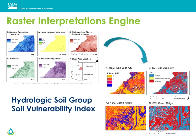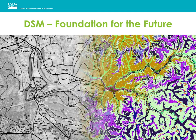Here are some results from the interpretations engine for hydrologic soil group and soil vulnerability index. The raster data inputs are shown in the upper left of the slide and include property maps derived with DSM methods, DEM derivatives, and SSURGO derivatives. Input layers were fed into the algorithms in the R interpretations engine to produce raster-based interpretive maps shown in the lower right of the slide. The results are promising and provide a great starting point for generating a complete library of interpretations from raster input. That concludes my update from the DSM focus team. Thank you for listening.